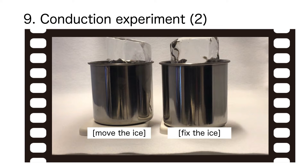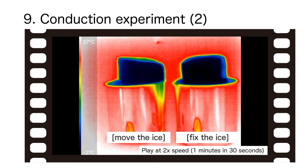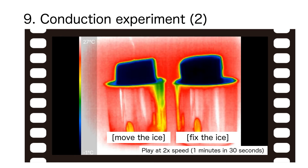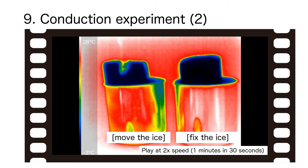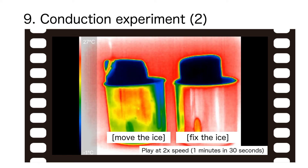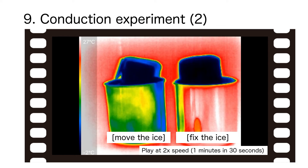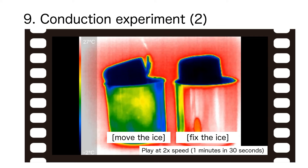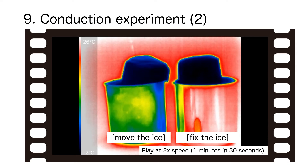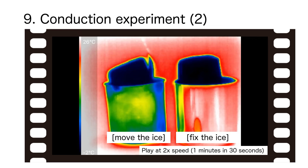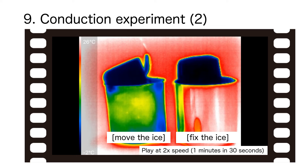Let's confirm the difference in heat transfer by keeping the ice moving in an experiment. Ice is put in a stainless steel mug; the ice in one mug is moved along the inner surface, while the other is left stationary. On the right side of the screen, you can only see a color change on the side of the mug where the ice is touching, but not on the front or right side where the ice is not touching. On the left side of the screen, as the ice continues to move, the temperature of the entire mug surface drops and the color changes rapidly from red to blue.